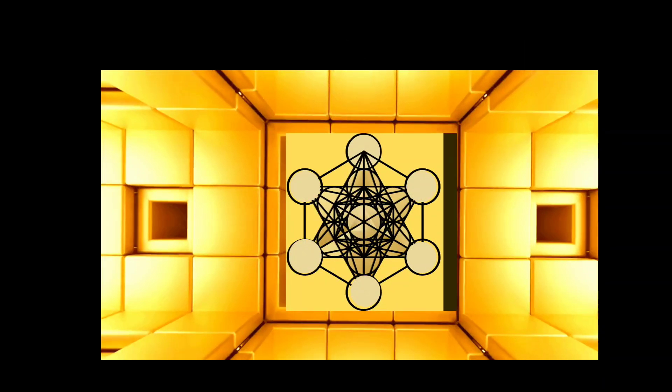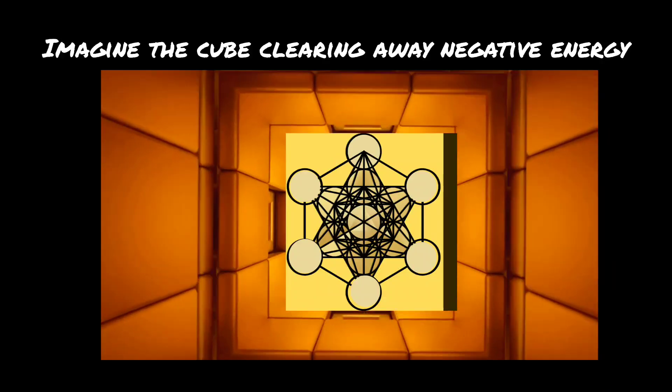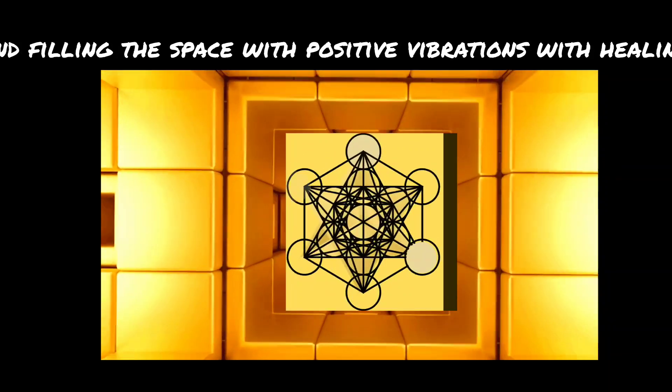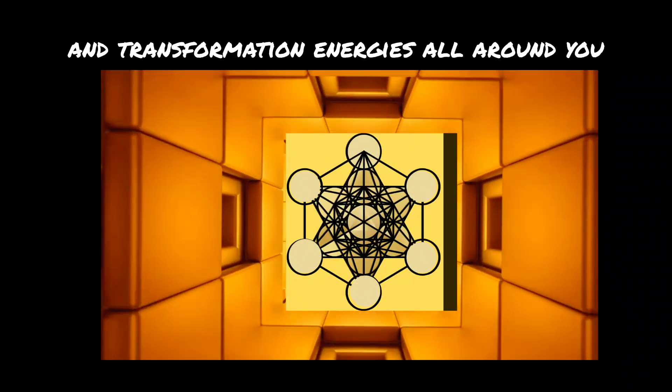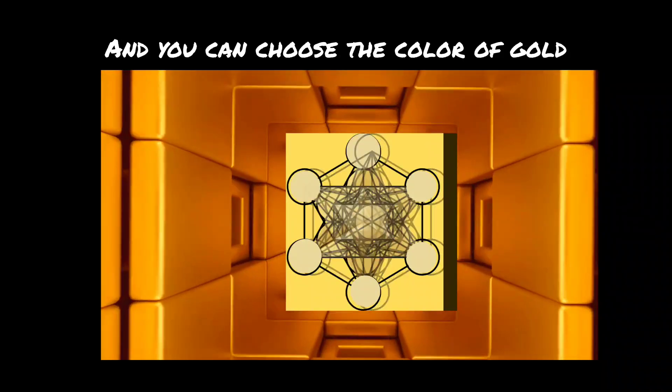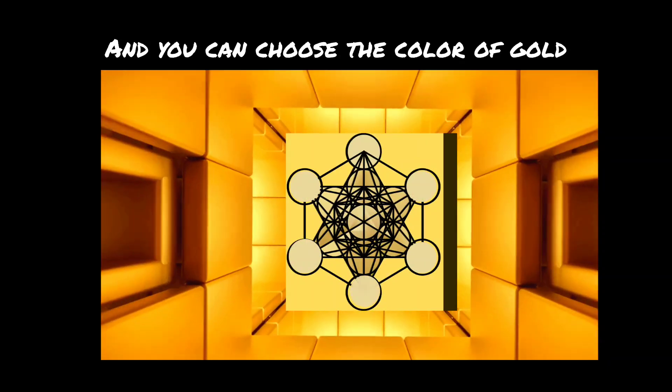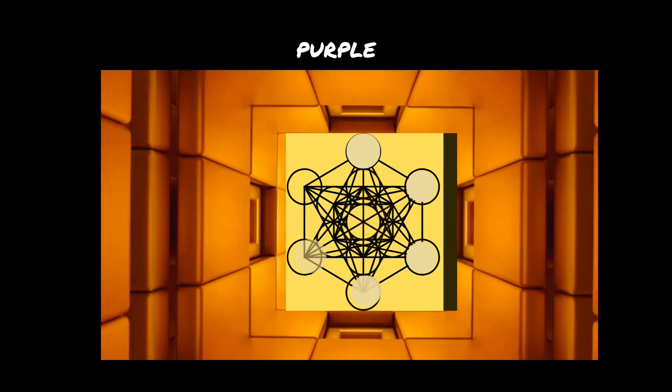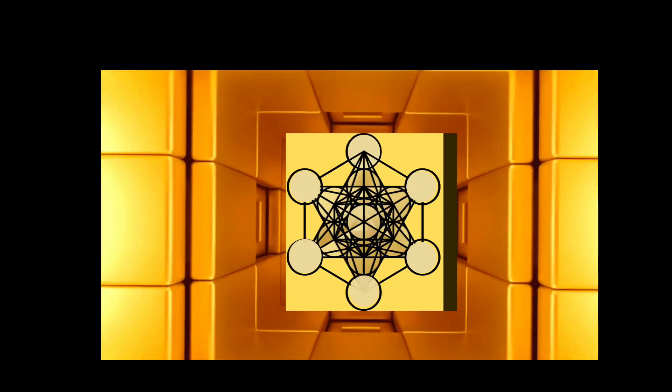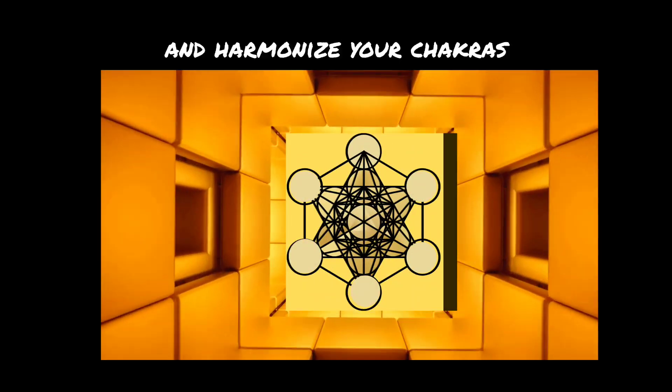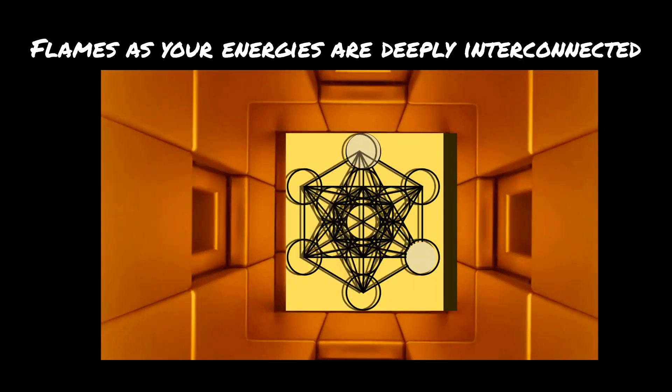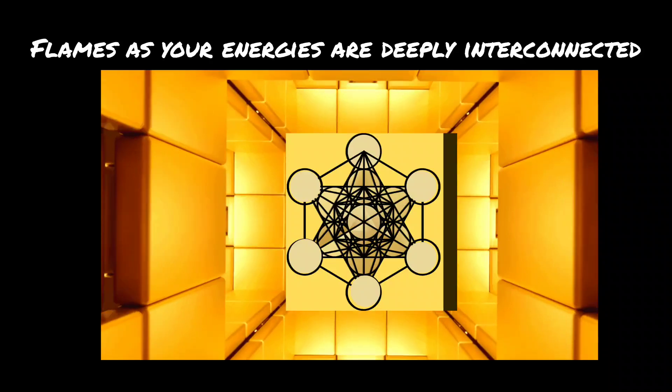Step nine: imagine the cube clearing away negative energy and filling the space with positive vibrations, with healing and transformation energies all around you as you let go of all worries and stresses. You can choose the color of gold, purple, green, or white. Use Metatron's cube to balance and harmonize your chakras, which can be especially beneficial for twin flames as your energies are deeply interconnected.